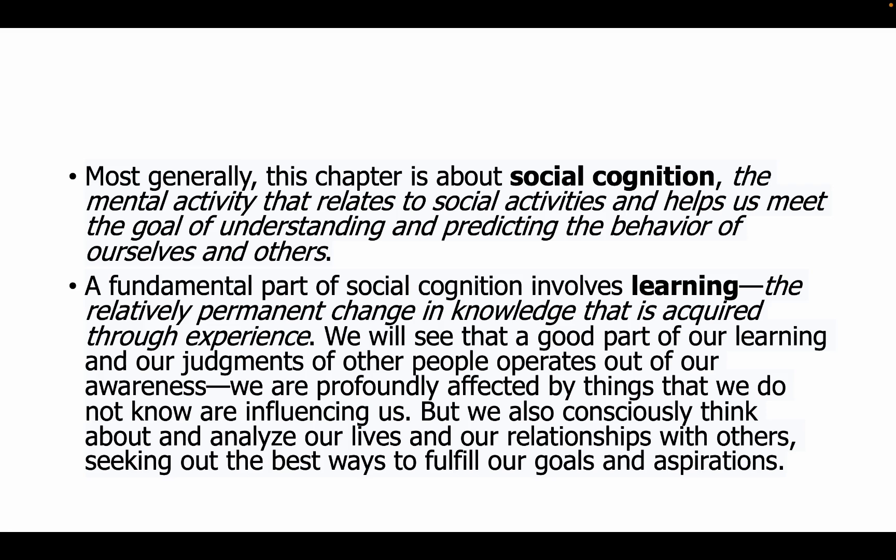Most generally, this chapter is about social cognition — the mental activity that relates to social activities and helps us meet the goal of understanding and predicting the behavior of ourselves and others. A fundamental part of social cognition involves learning: the relatively permanent change in knowledge that is acquired through experience. We will see that a good part of our learning and our judgments of other people operates out of our awareness.